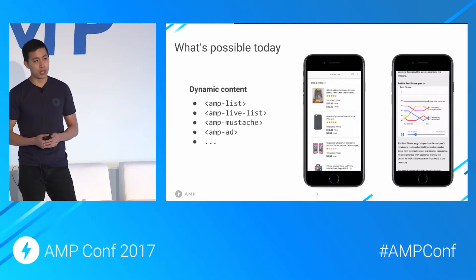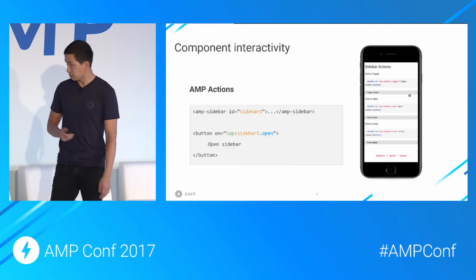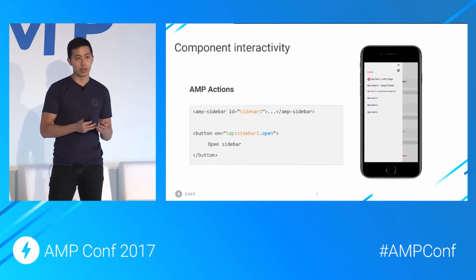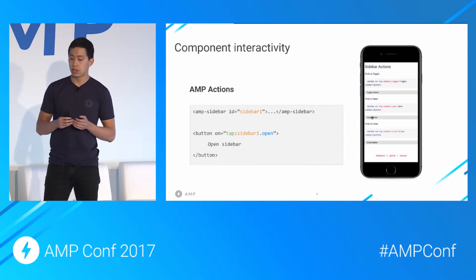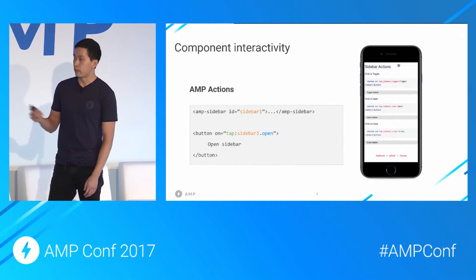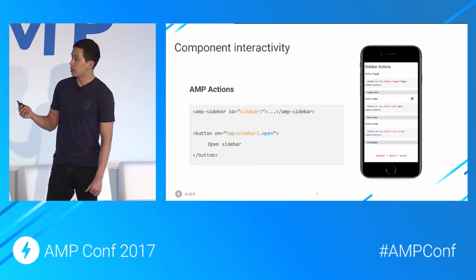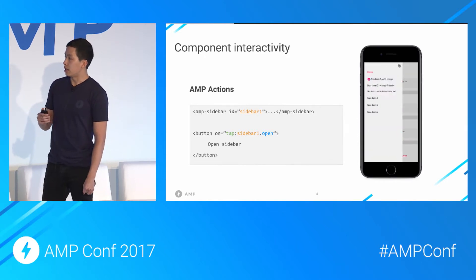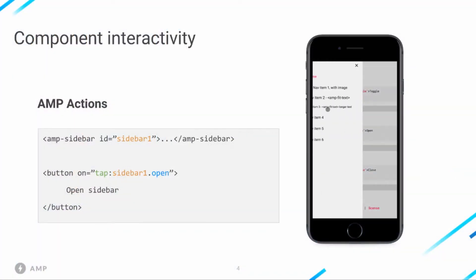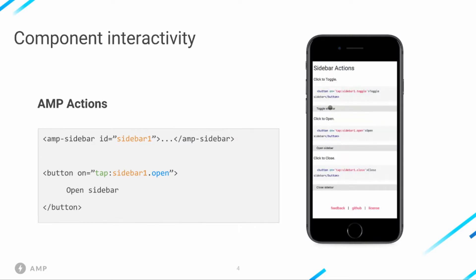We also support ways to have interactivity across components with AMP actions. With AMP's custom on attribute, we support a simple way for one AMP component to invoke actions on another AMP component. The most common event is tap. In this simple example, there's an AMP sidebar with an ID sidebar one, and a button with that on attribute that, on tap, calls the open action on the sidebar. Fairly straightforward.